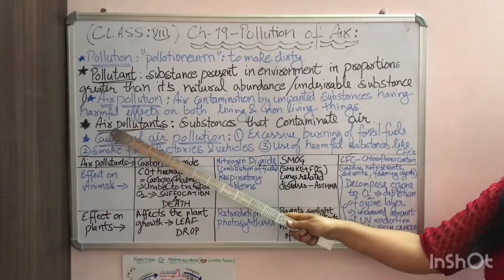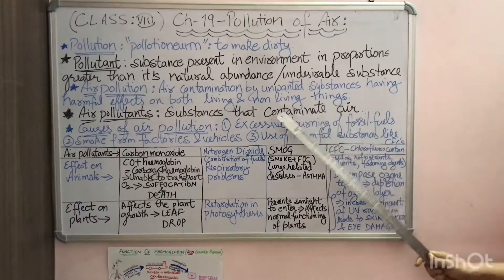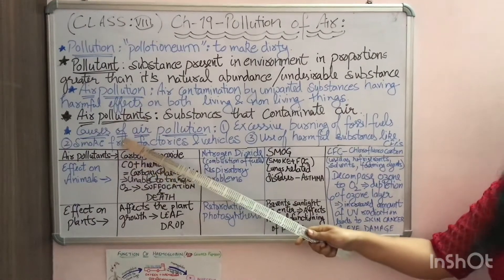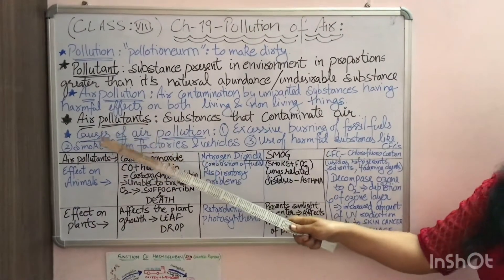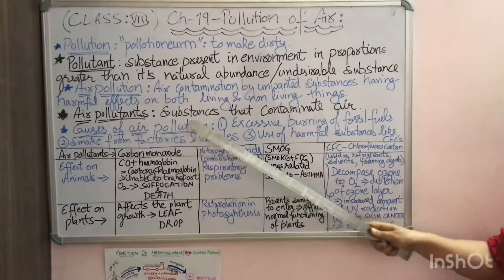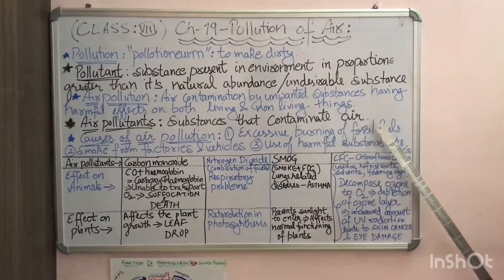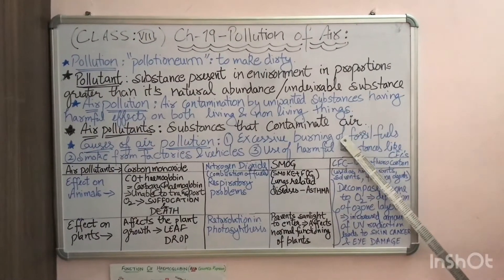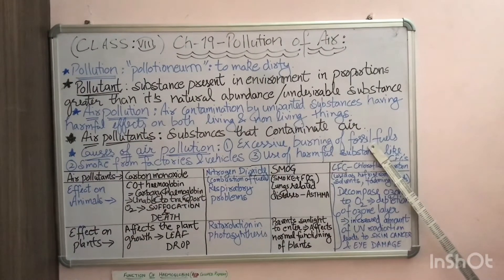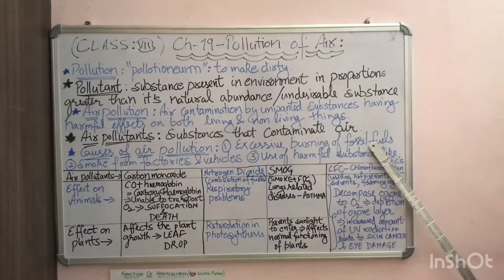Air pollutants are substances that contaminate air. There are so many air pollutants around us, and we will study them one by one. But before that, we must know the causes of air pollution. There are three main causes. The first one is excessive burning of fossil fuels — any type of fossil fuel such as LPG, diesel, petrol, or coal.